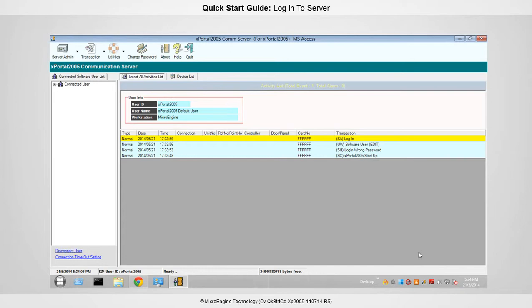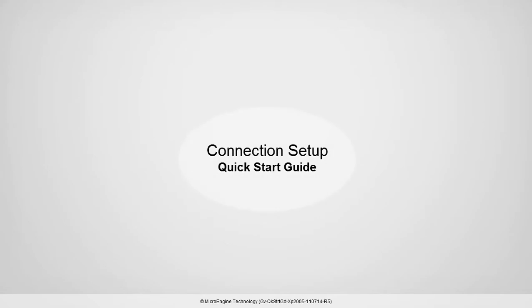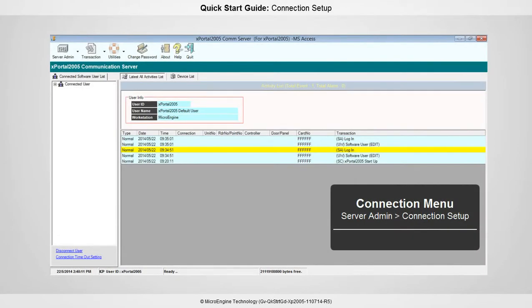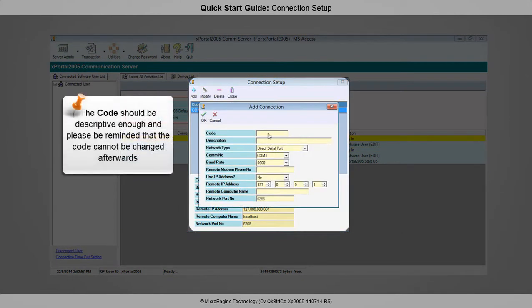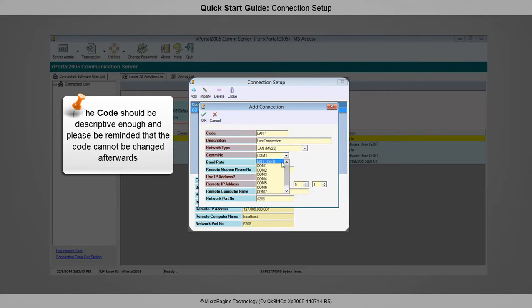Next, we are going to add a new connection. In this step, you are going to add a new connection. To add a connection, go to Server Admin and then select Connection Setup. Click the Add button to add a new connection. Please fill up the highlighted fields only. This is an example of adding a connection using a local area network. For the remote IP address, set the controller IP address.